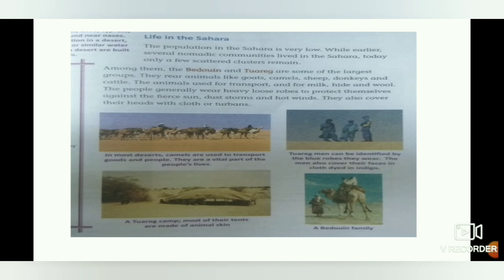In most deserts, camels are used to transport goods and people — they are a vital part of the people's lives. The Tuareg men can be identified by the blue robes they wear. The men also cover their faces and their head. You can see a Tuareg camp; most of their tents are made of animal skin. And you can also see a Bedouin family.